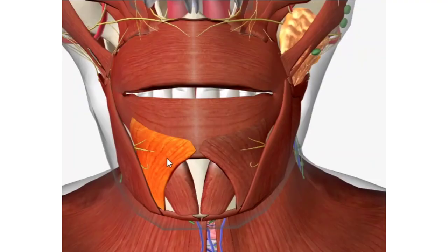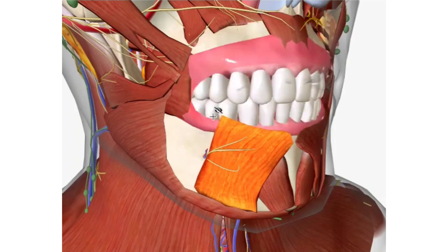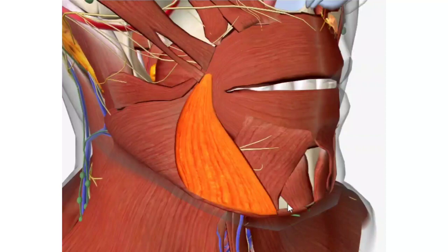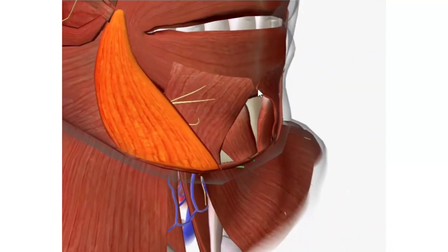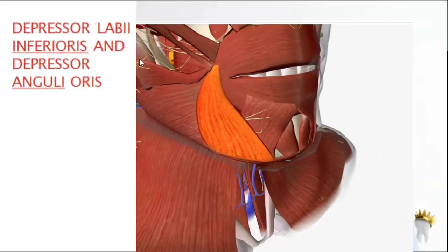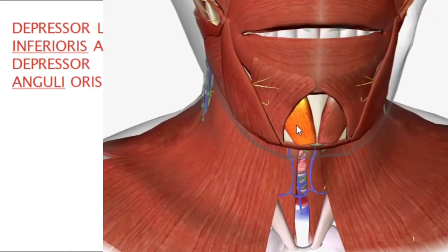Depressor labii inferioris arises from the medial extent of the oblique line of the mandible and inserts into the skin of the lower lip, depressing it. Depressor anguli oris arises at the oblique line of the mandible and inserts into the skin of the corner of the mouth, depressing the corner. The names clarify their insertions: labii = lower lip, anguli = corner of the mouth.